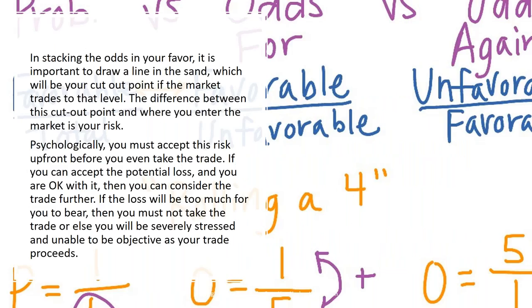In stacking the odds in your favor, it's important to draw a line in the sand — your cutout point if the market trades to that level. We call this a stop loss: it's where your trade will automatically close if the market falls or rises to a specific point. The difference between this cutout point and where you enter the market is your risk. Psychologically, you need to accept this risk upfront, even before you make the trade. If you can accept the potential loss and you're okay with it, then you can consider the trade further. If the loss will be too much to bear, you must not take the trade.